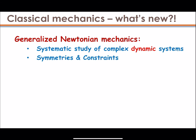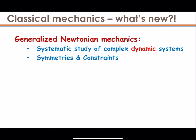So let's talk about classical mechanics — what's new in this course. We're going to be talking about Newtonian mechanics, but it's going to be a generalized Newtonian mechanics: a systematic study of complex dynamical systems implementing symmetries and constraints. We'll do this within the Lagrangian formulation, which is a powerful language to formulate fundamental physical laws and concepts. It involves generalized coordinates, and this really helps us to solve hard problems. It can also be extended to special and general relativity, quantum mechanics, quantum field theory, and so on.